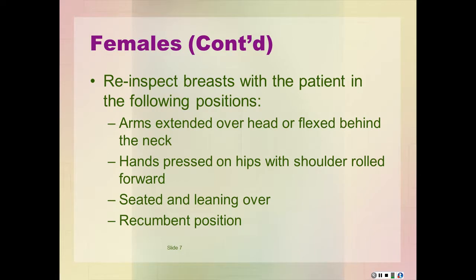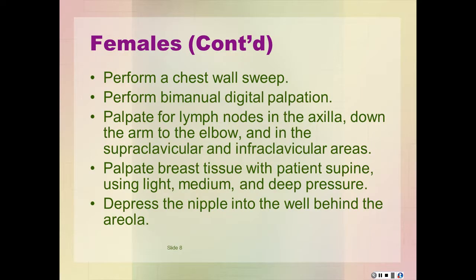We should re-inspect the breast with the patient in various positions. Some of the main ones are positioning the patient with the arms extended over the head or flexed behind the neck, the hands pressed on the hips with shoulders rolled forward, seated and leaning over, as well as in the recumbent position. We should palpate for lymph nodes in the axilla, down the arm to the elbow, and in the supra and intraclavicular areas.